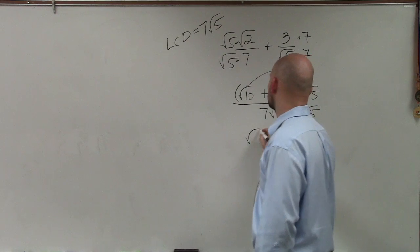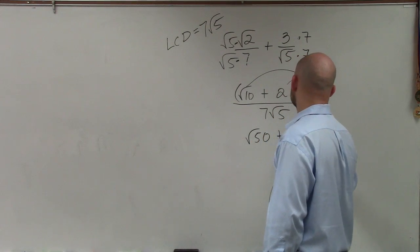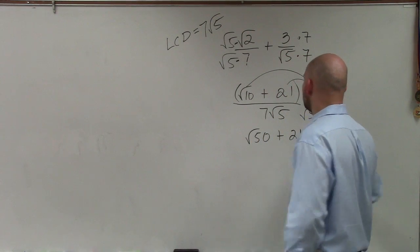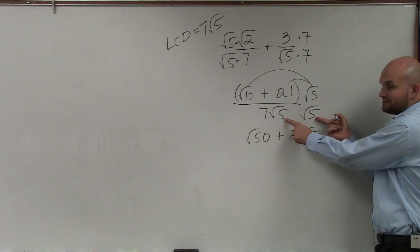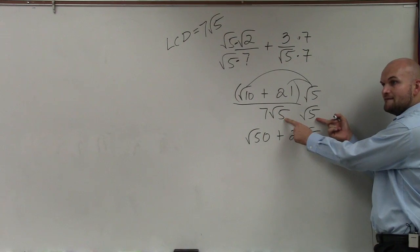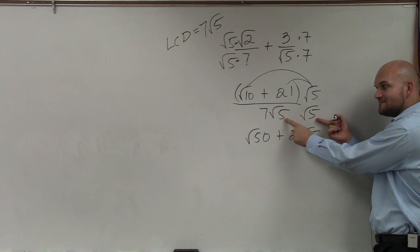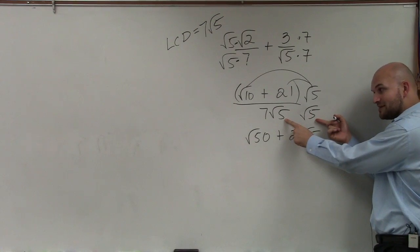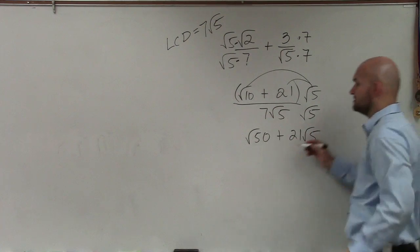Therefore, √5 times √10 is √50, plus 21 times √5. √5 times √5 is just 5, and √25 is 5 times 7 is 35.